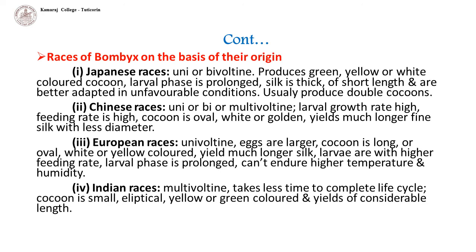Four races of Bombyx are found on the basis of origin. Japanese races: they are uni- or bivoltine. They produce green, yellow or white colored cocoons. The larval phase is prolonged. Silk is thick and of short length, and they are better adapted to unfavorable conditions.